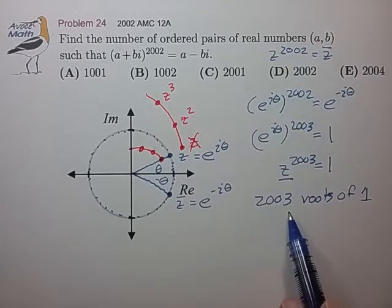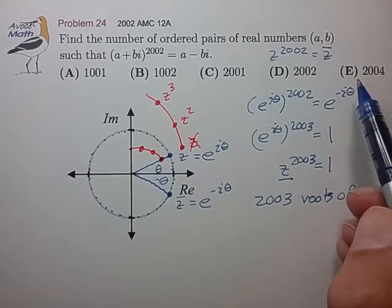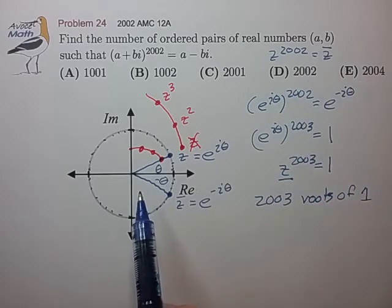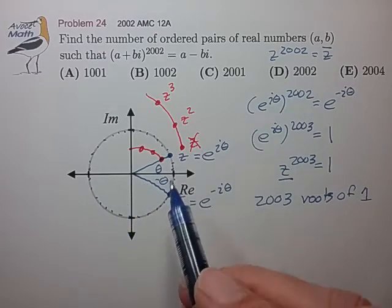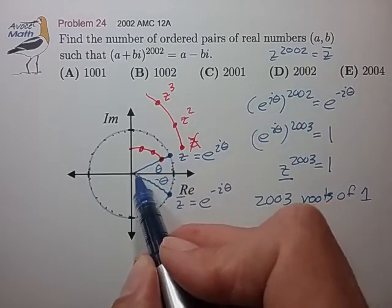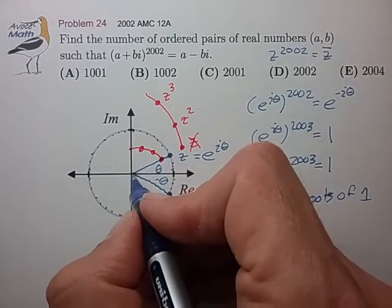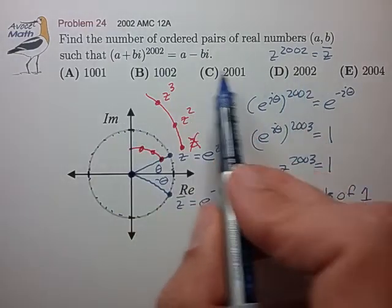We certainly have more roots than choice D, so the answer is probably E, which means we're probably missing one of the solutions. If you stare at this problem a little more carefully, you realize that the problem with Z inside the unit circle is only true for Z greater than 0.